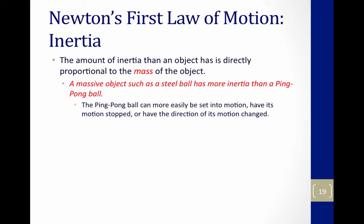If you remember Newton's first law of motion — and we probably remember this from high school — the amount of inertia that an object has is directly proportional to the mass of that object. A massive object, such as a steel ball, has more inertia than a ping pong ball. The ping pong ball can more easily be set into motion, have its motion stopped, or have the direction of its motion changed.